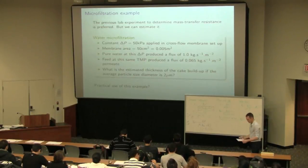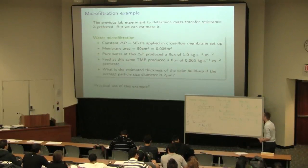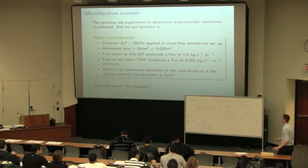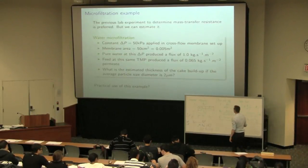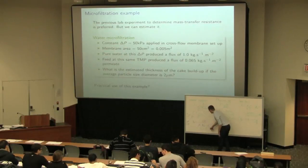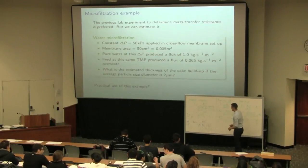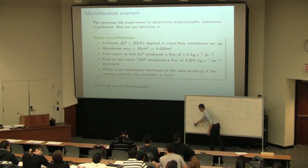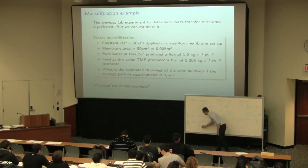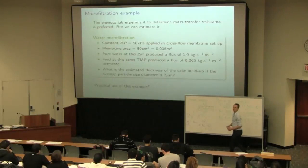But what we're going to do here is I'm going to move to using the units of volumetric flux. Because what we're after here is the cake thickness, LC. And to get the cake thickness, we need to get an estimate of the cake's resistance. And the correlation we have for cake's resistance requires the flux that's expressed in the volumetric form. So what I'm going to do is I'm going to estimate my membrane resistance in volumetric form as well.